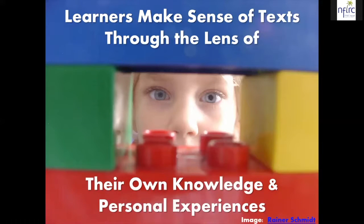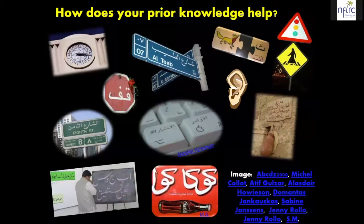Learners also make sense of text through the lens of their own knowledge and personal experiences. Think about how your prior knowledge of different things helps you to guess what each of these characters or words is saying even if you don't speak Arabic. You can probably guess what the signs mean — that some of them are street signs, for example. In other words, if we want to scaffold interpretive inquiry, we need to think about how we're going to activate learners' prior knowledge and experiences.